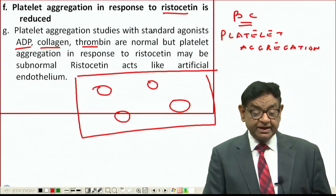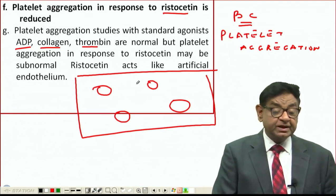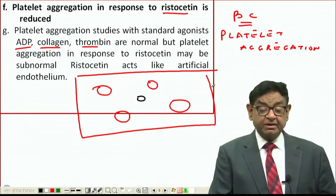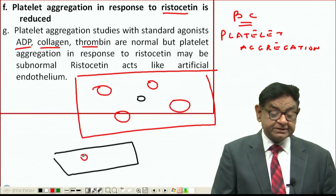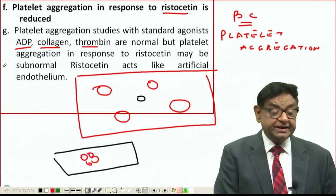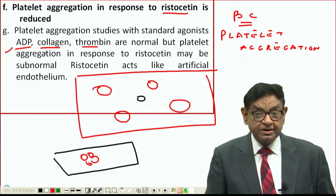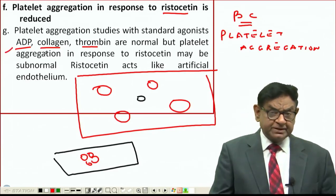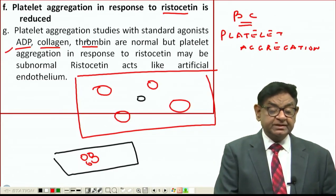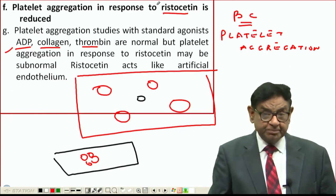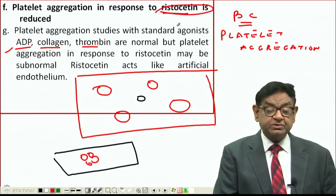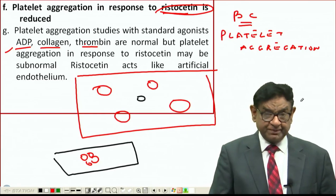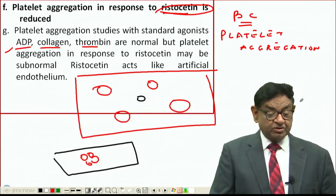When ADP is added, clumping of platelets happens. The same occurs with collagen, thrombin, or ristocetin. These molecules are used to study platelet aggregation. In von Willebrand disease, aggregation will happen with ADP, collagen, and thrombin, but if you add ristocetin, aggregation will not happen.